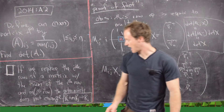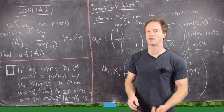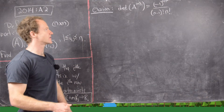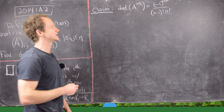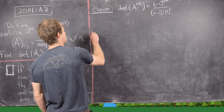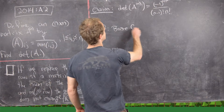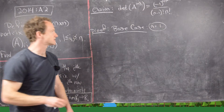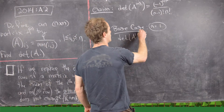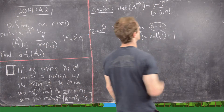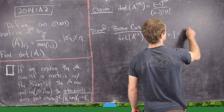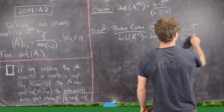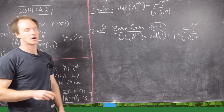We can finish with the following claim: det(A^n) = (−1)^(n+1) / ((n−1)! · n!). We prove this by induction. Base case n = 1: det(A^1) = 1, and (−1)^(1+1) / (0! · 1!) = 1. The base case holds.